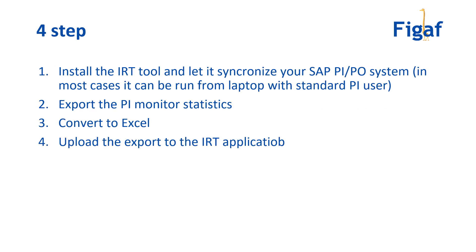It is done in four steps. The first step is to install the ET application — download it, install it, configure it with the PI/PO system, and download all the PI content. That's just a click of a button after you've configured it. Then you need to download the PI monitor statistics, convert it to Excel, and upload it to the ET application.